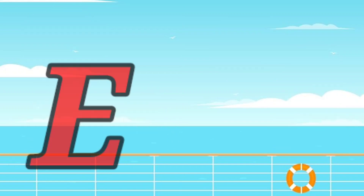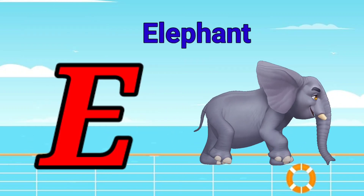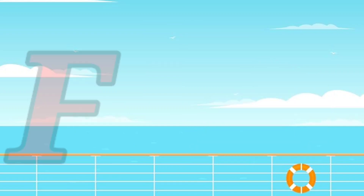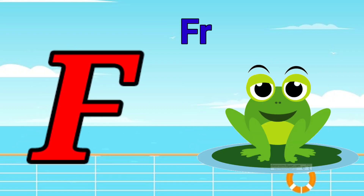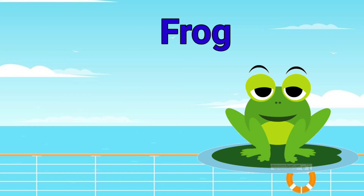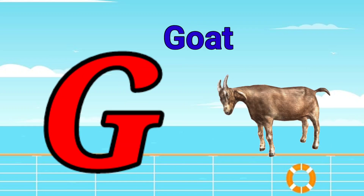E is for elephant, e-e-elephant. F is for frog, f-f-frog. G is for goat, g-g-goat.